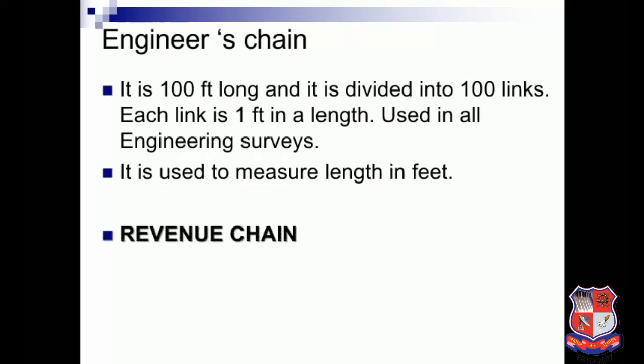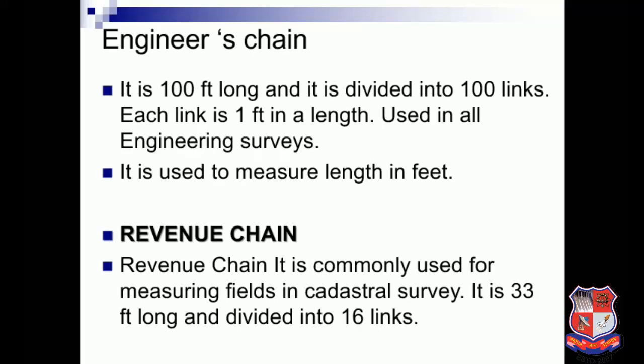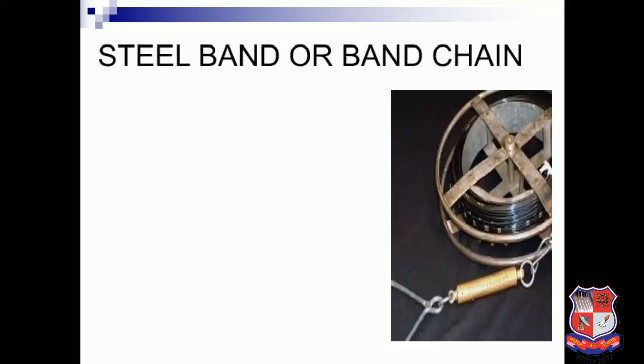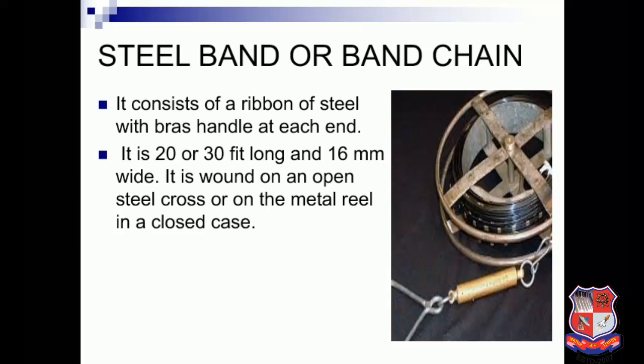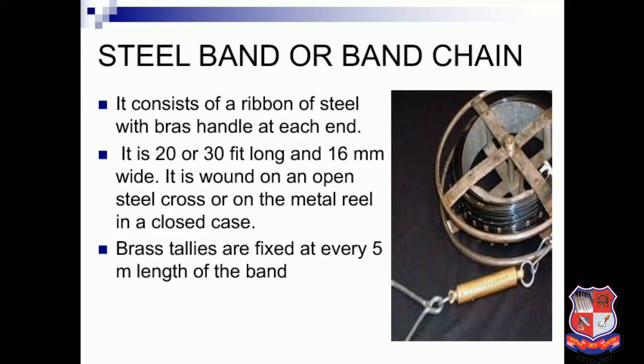The revenue chain is commonly used for measuring fields in cadastral survey. It is 33 feet long and divided into 16 links. The steel band or band chain consists of a ribbon of steel with a brass handle at each end. It is 20 or 30 meters long and 6 mm wide, wound on an open steel cross or on a metal ring in a closed case. Brass tallies are fixed at every 5-meter length of the band.